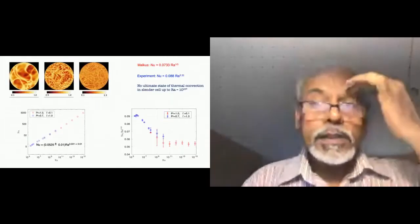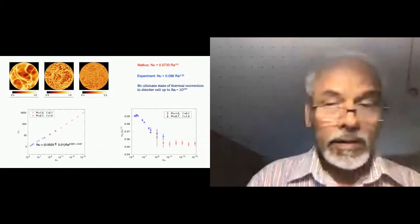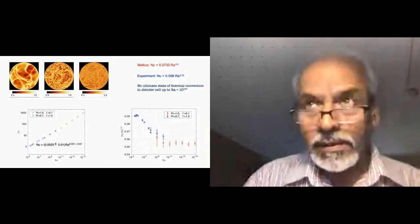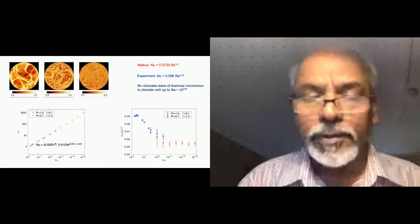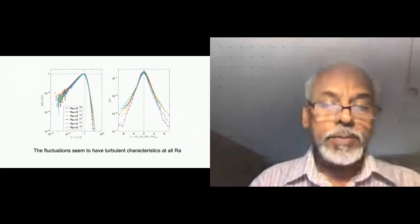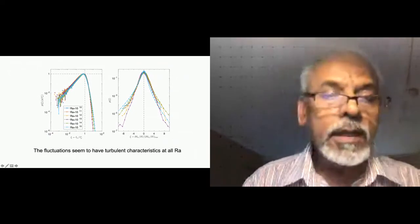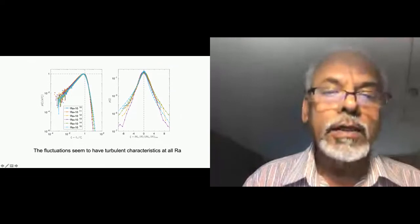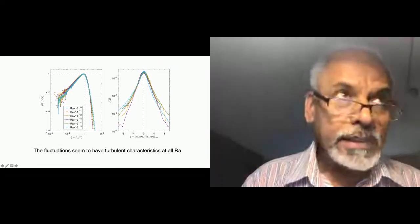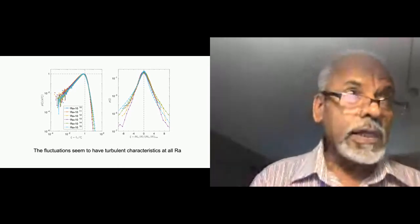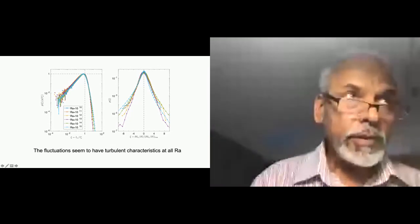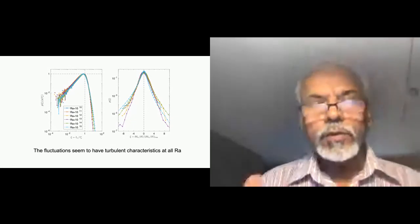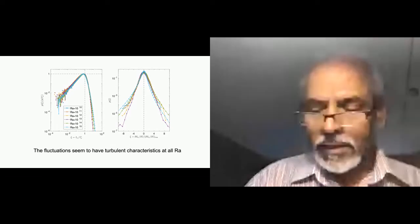But still, there are issues and there are debates going on. But my main point is computations are able to resolve issues like this. Now, one reason why people think there is the ultimate state is because they think that at some point along the Rayleigh number axis, the boundary layer at the wall becomes turbulent and therefore it becomes a transition to fully developed turbulence. And that's what gives rise to the half power law. In fact, in our simulations, you measure properties like the wall shear stress and its probability density.